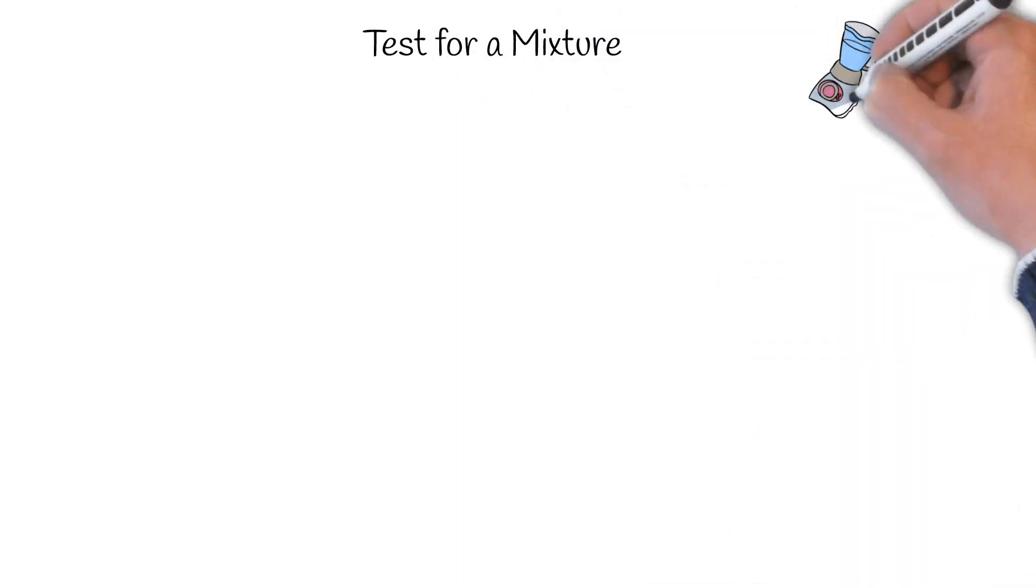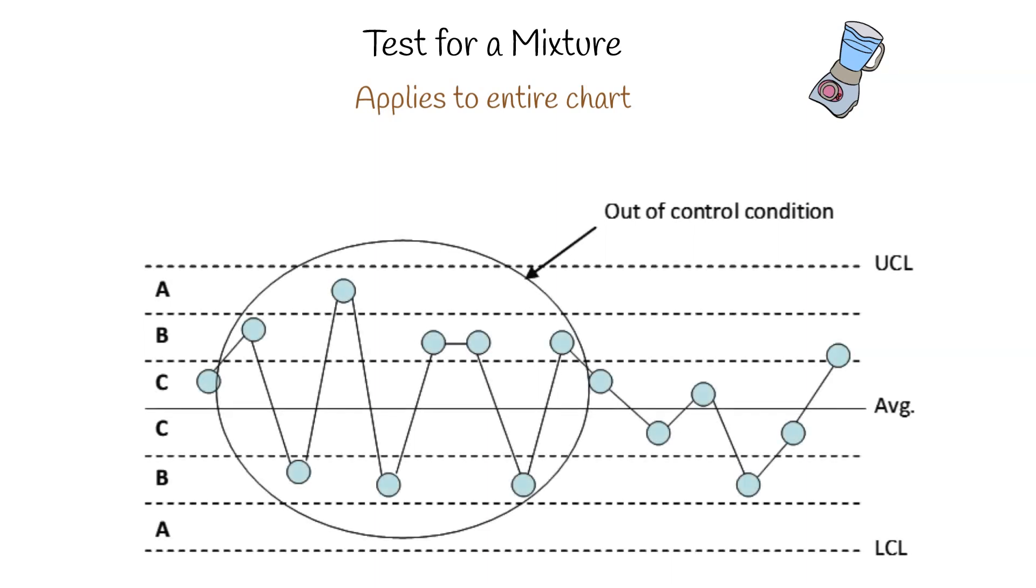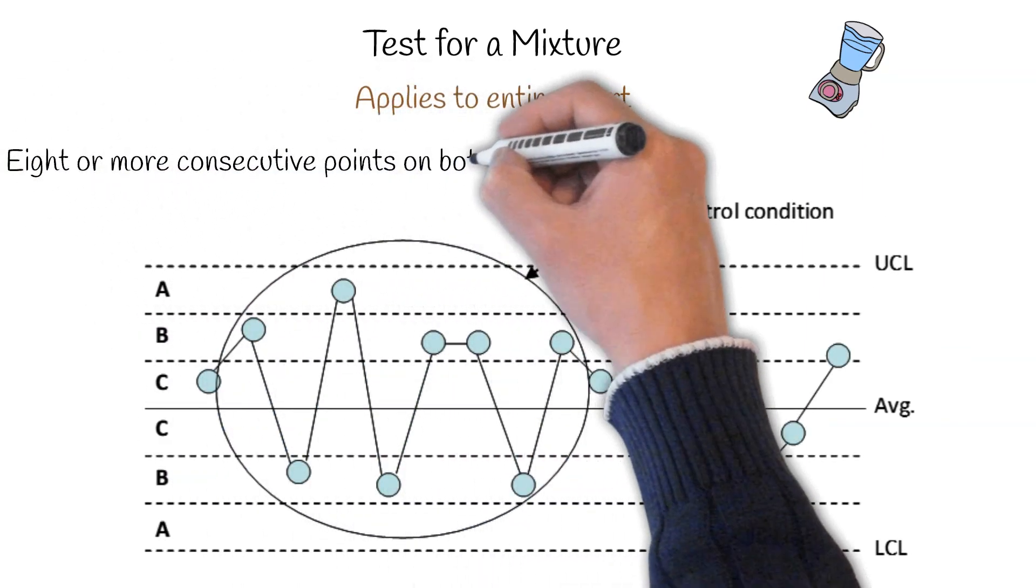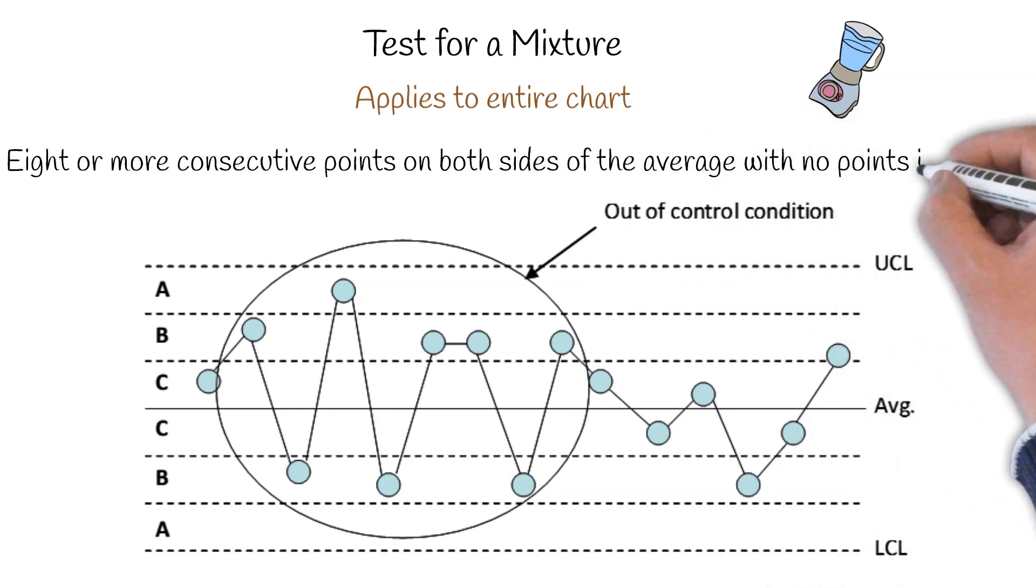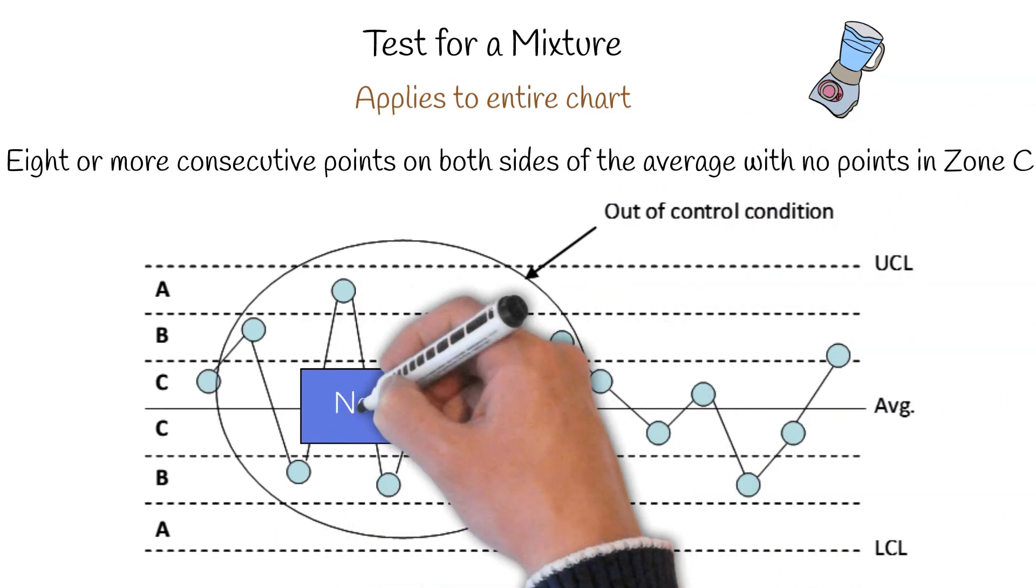Then you have a test for a mixture. And this applies to the entire chart as well. You have an out of control situation if you have eight or more consecutive points on both sides of the average with no points in zone C. So there are none in C on this test for a mixture.